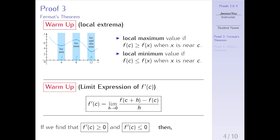Finally, if we look at the last sentence of this slide: if we find that f'(c) is greater than or equal to 0 and f'(c) is less than or equal to 0 at the same time, then f'(c) has no choice other than being equal to 0. Let's put a box around this because this last sentence is very important at the end of the proof.